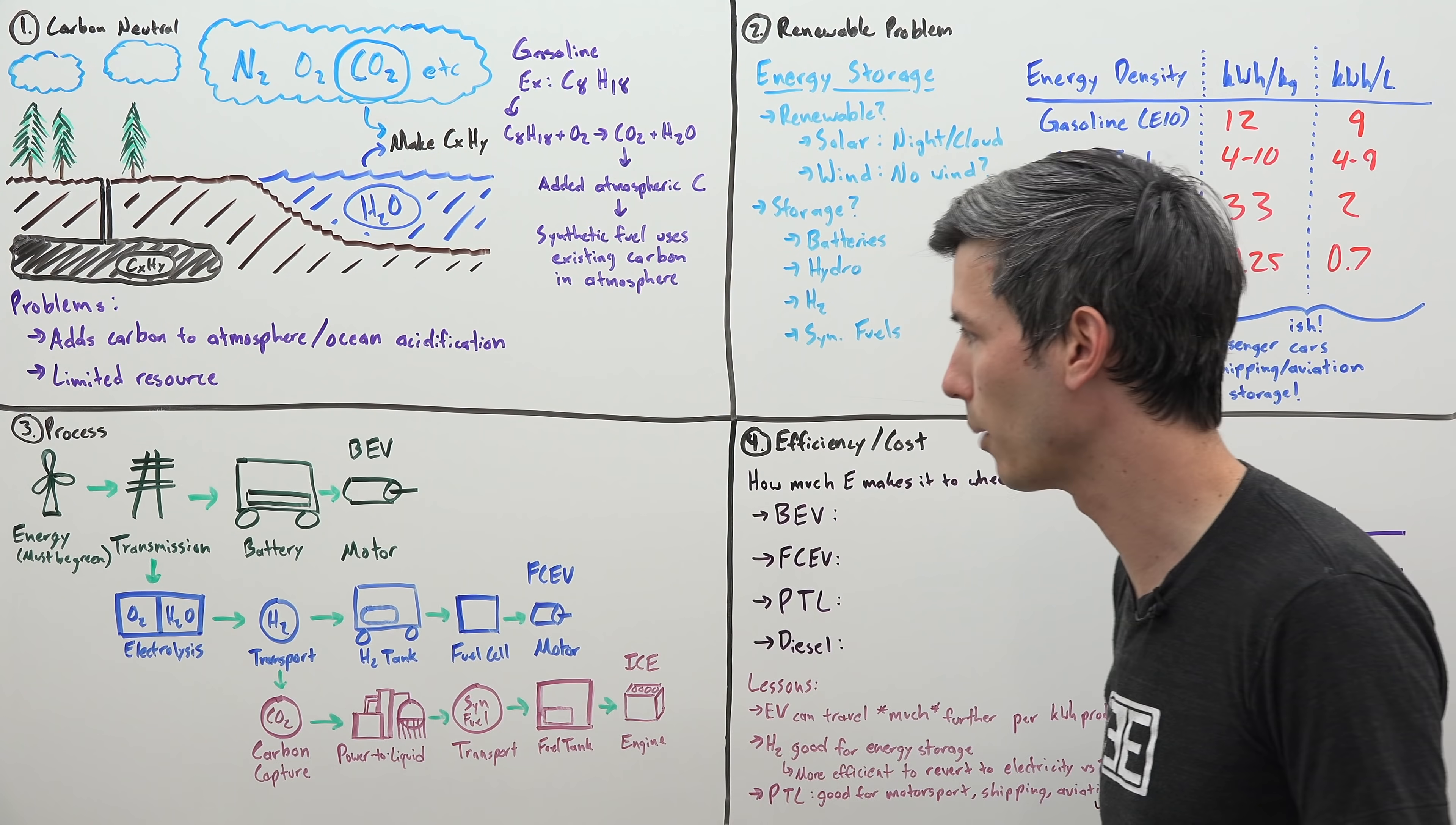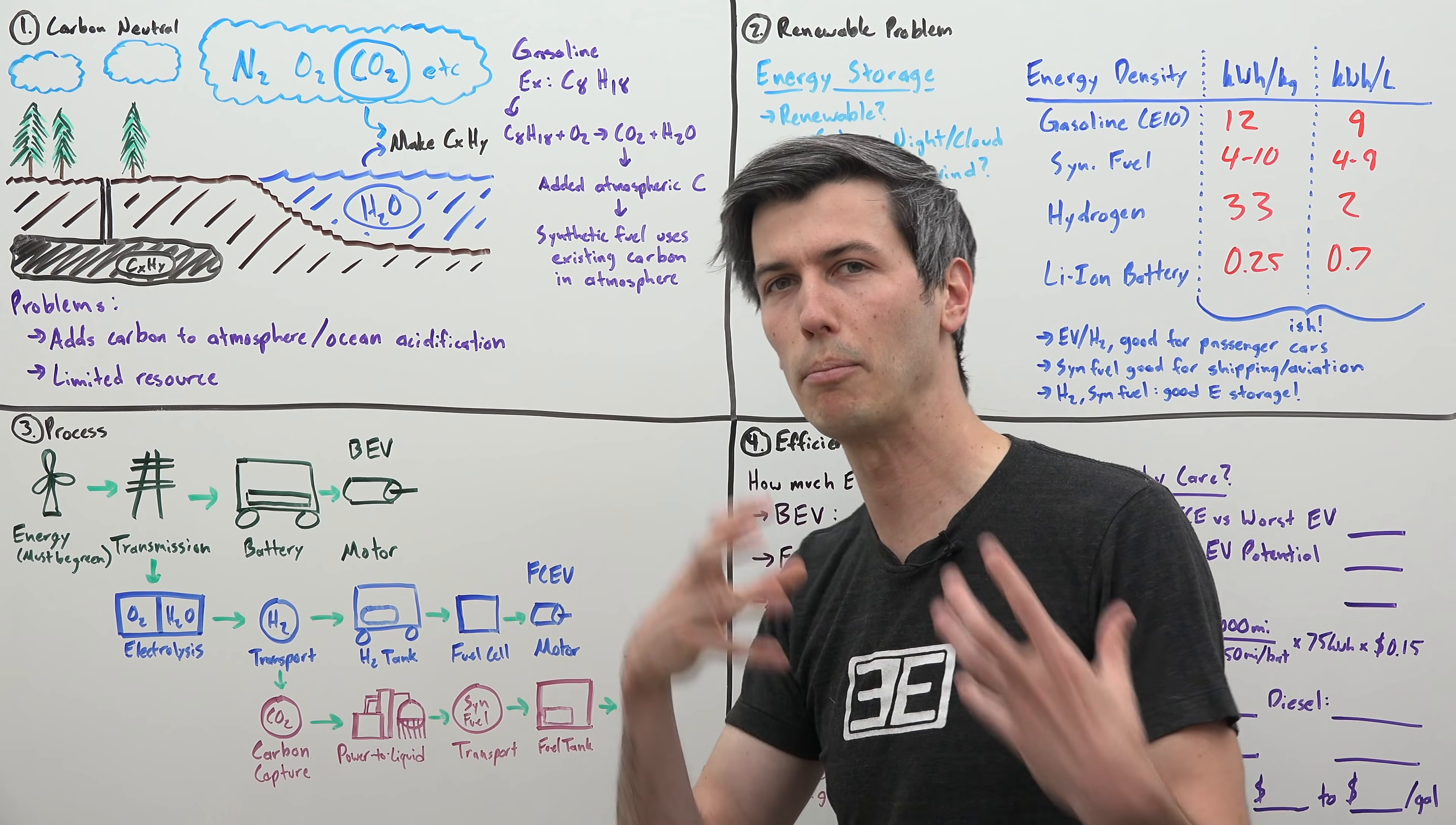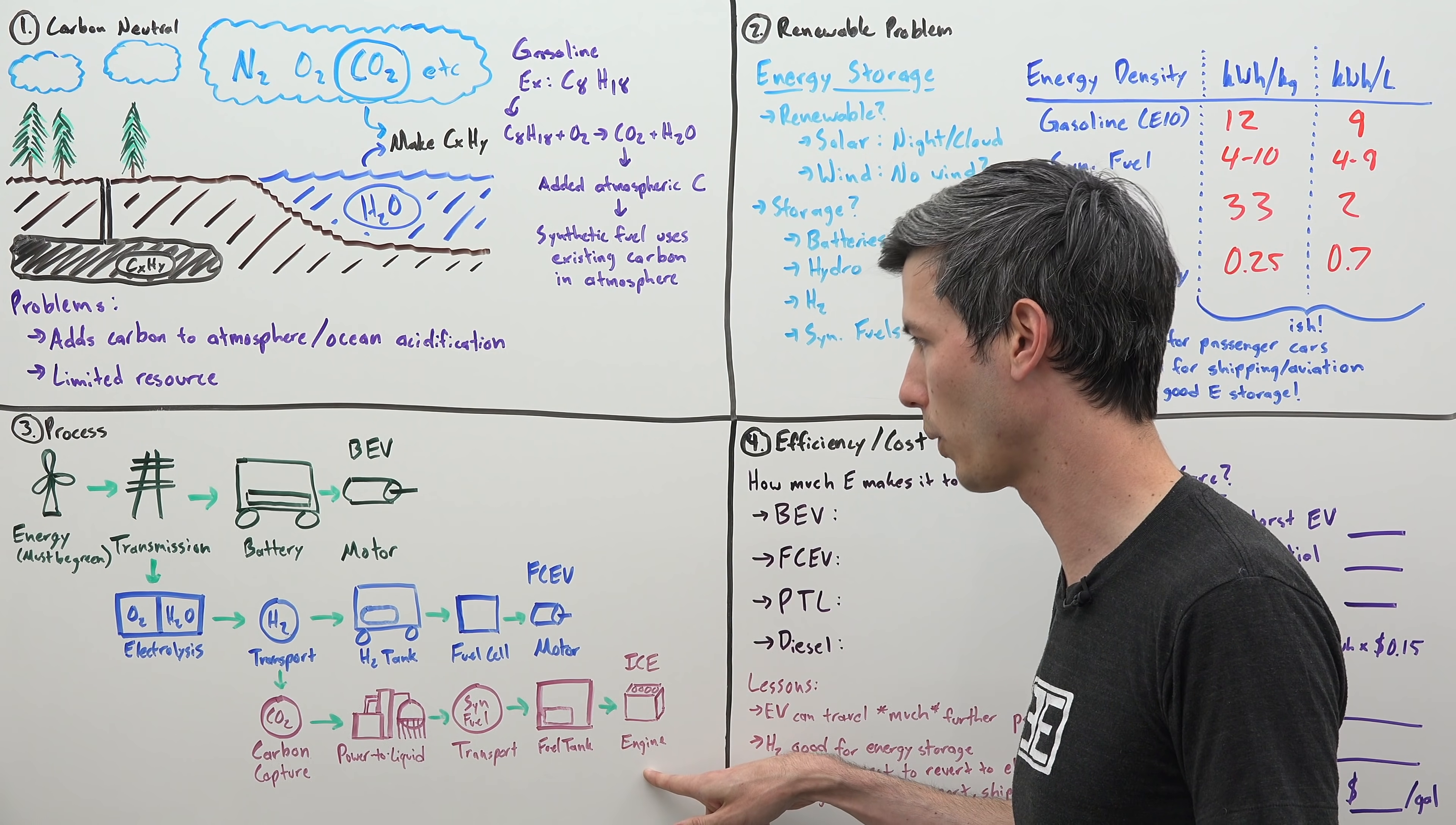For a fuel cell electric vehicle, we're going to transmit that energy to perform electrolysis. We're going to use electrolysis to create hydrogen, transport that hydrogen, move it into the tank of a vehicle. From the hydrogen tank, it goes to a fuel cell which converts it to electricity, and that electricity powers an electric motor which moves the vehicle. For our combustion vehicle in this synthetic example, you take that energy from your windmill, transmit it, create hydrogen using electrolysis, then you add carbon capture technology. You're capturing carbon dioxide from the atmosphere and getting that carbon for your power to liquid process.